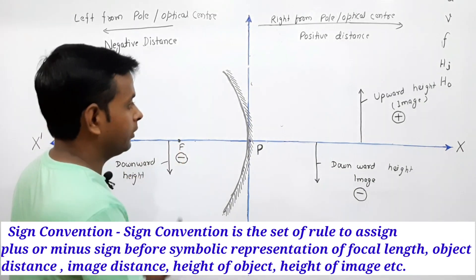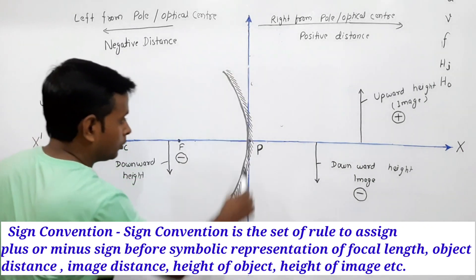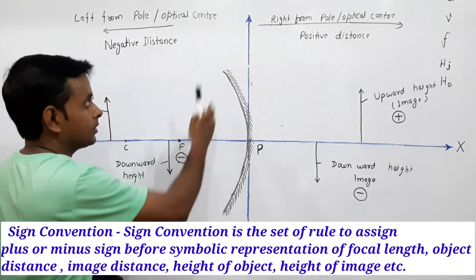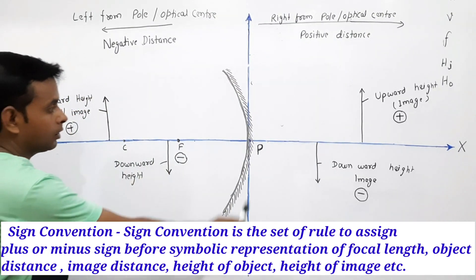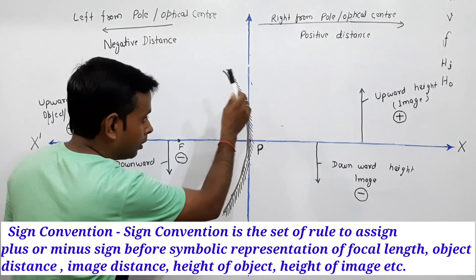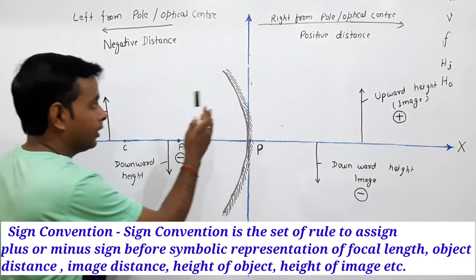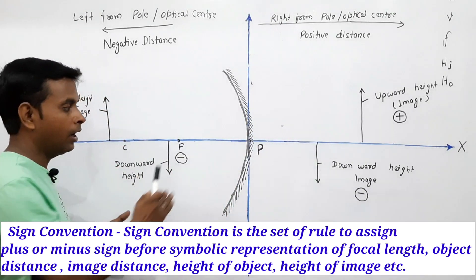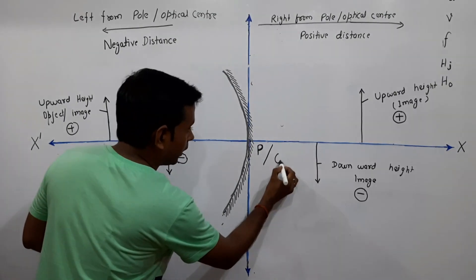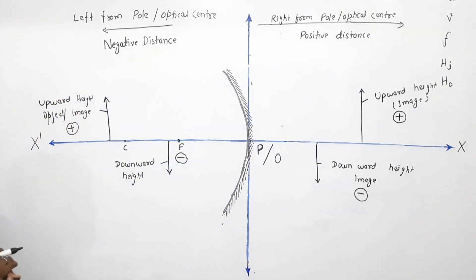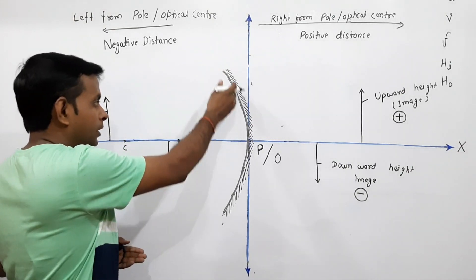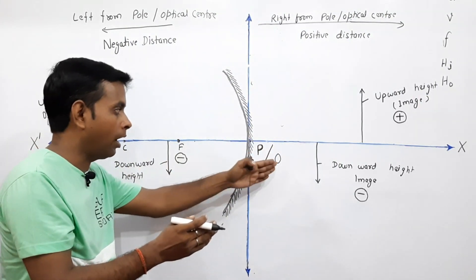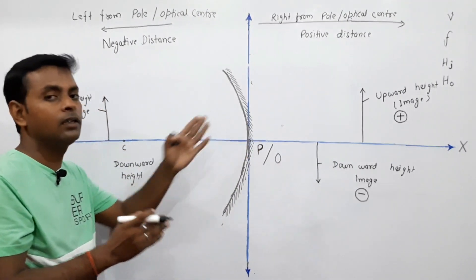If we compare the sign convention figure with a graph, the two horizontal and vertical lines serve as the x-axis and y-axis. The point of intersection, which in a graph is called the origin, is taken as the pole in the case of a mirror and as the optical center in the case of a lens. So when we place any mirror or lens at the origin, it is treated as the pole or optical center.